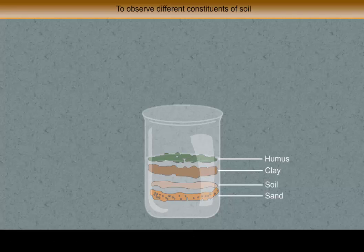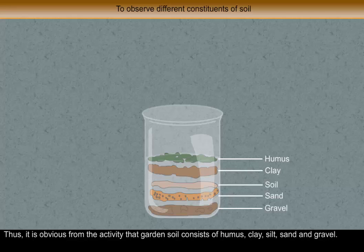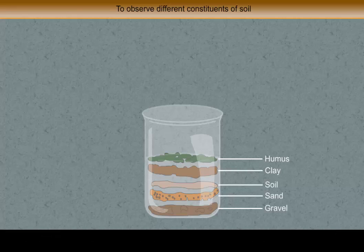Below the layer of clay is the layer of silt. The fourth layer from the top consists of sand particles. The lowest layer has gravel. Thus, it is clear from the activity that garden soil consists of humus, clay, silt, sand, and gravel.